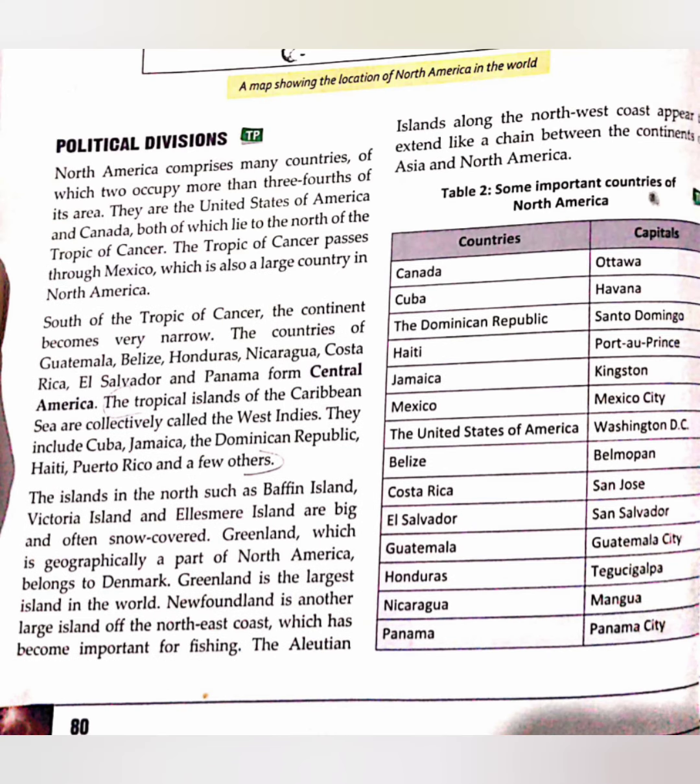The Aleutian Islands spread along the northwest coast of North America and form a chain between the continents of Asia and North America.